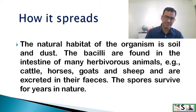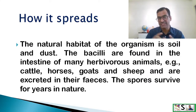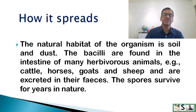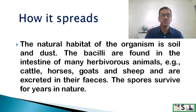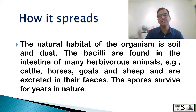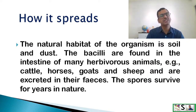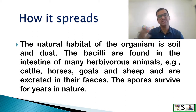How does it spread? It is very common and everybody knows the disease spreads by injuries or wounds. The natural habitat of the organism is soil and dust. The bacilli are found in the intestine of many herbivorous animals such as cattle, horses, goats, and sheep, and are excreted in their feces. The spores survive for years in nature.